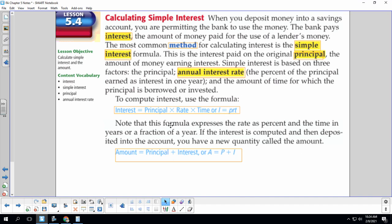Note that this formula expresses the rate as a percent and the time in years or a fraction of the year. So we might be using a little fraction here. If the interest is computed and then deposited into the account, you have a new quantity called the amount. The amount is the principal plus the interest that you've earned, or A equals P plus I.